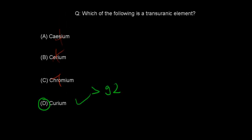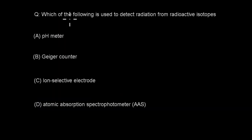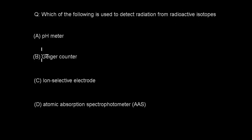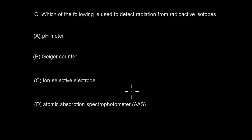Next question: which of the following is used to detect radiation from radioactive isotopes? A. pH meter, B. Geiger counter, C. ion-selective electrode, or D. atomic absorption spectrophotometer. I'll give you five seconds to try to answer the question, and then when you're ready, just press play.